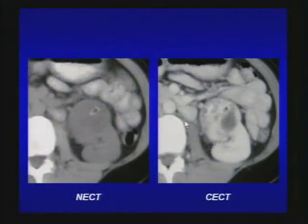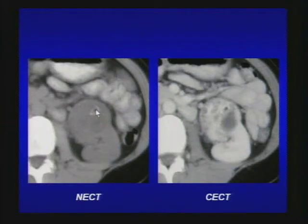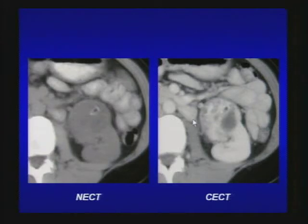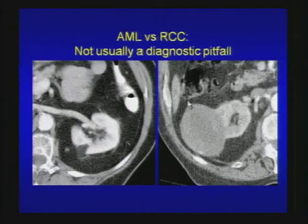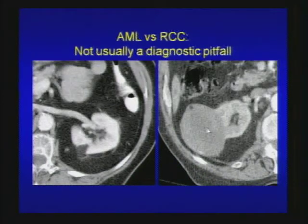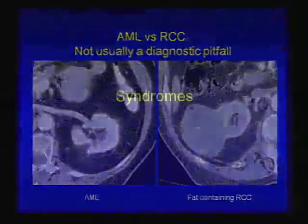Here's a case where you see a predominantly solid enhancing mass from the left kidney. On non-contrast CT there appears to be a spot of fat — and in fact it is fat, but this is not an AML. This is actually a fat-containing renal cell carcinoma, as sometimes RCC can entrap fat or it can result from osseous metaplasia. With this much solid component, you call this renal cell carcinoma. On your left, a predominantly fatty mass from the left kidney is AML; on your right, a predominantly solid mass with a little bit of fat is fat-containing RCC.